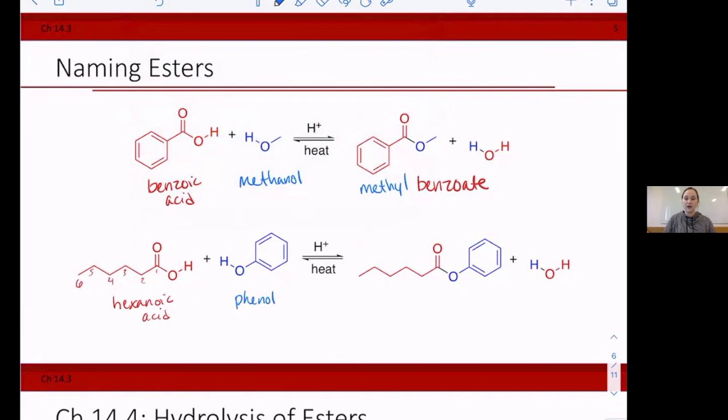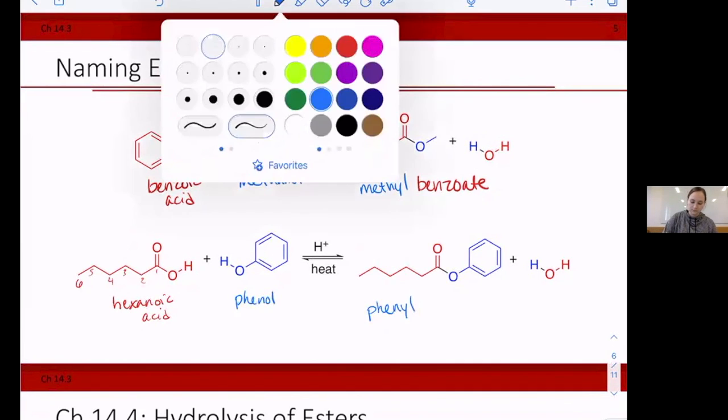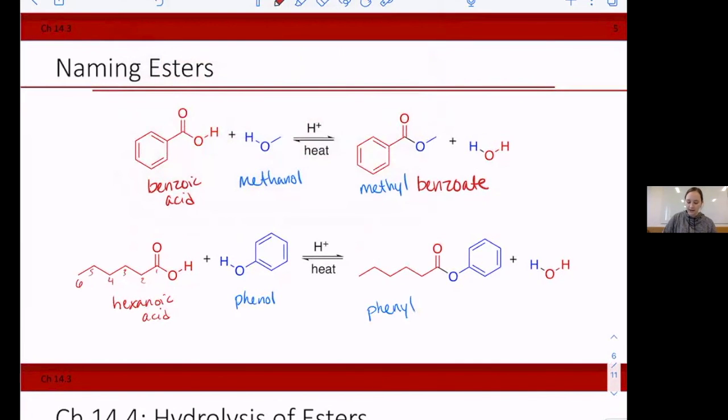So our final name, we start with our alcohol, but then the Y-L version. So phenyl. And then our carboxylate name. So hexanoic acid, we drop the IC acid and add in our A-T-E at the end. So hexanoate. So phenyl hexanoate is the name of this molecule.